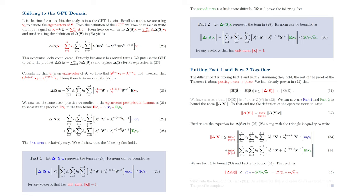We can therefore use fact 1 to bound equation 33, and we can use fact 2 to bound equation 34. The result is a term 2c epsilon coming from 33 bounded as in fact 1, and a term 2c delta square root of n epsilon coming from 34 bounded as in fact 2.